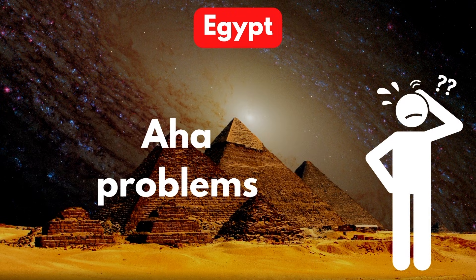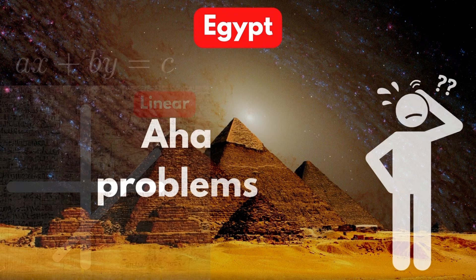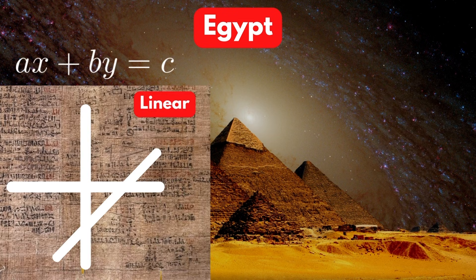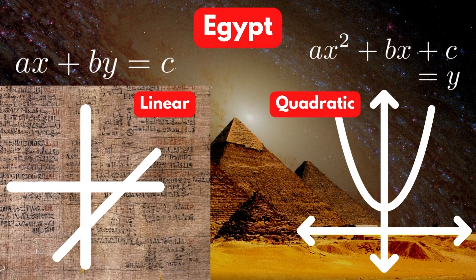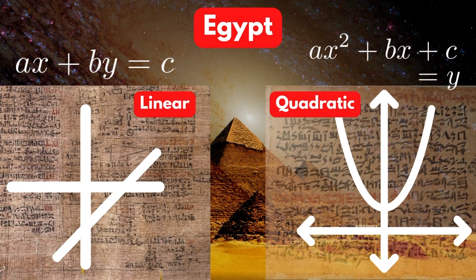These are called AHA problems, which involve finding unknown quantities and are often expressed as simple linear equations. The Egyptians also used quadratic equations, as seen in the Berlin papyri.